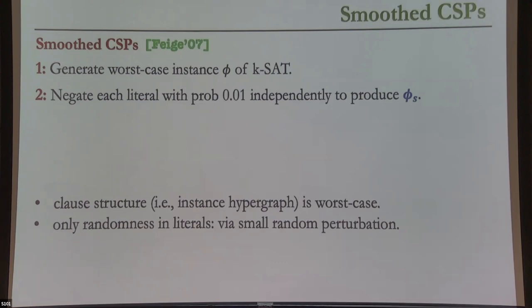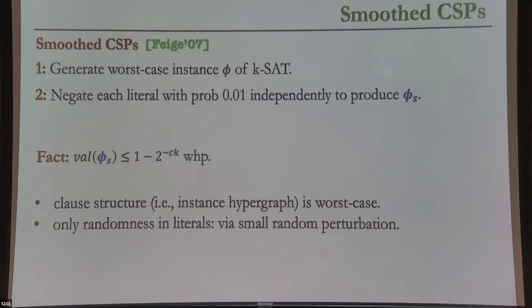The model he considered is inspired by Spielman–Teng smoothed analysis for linear programming. The idea is you start from a worst-case instance — an arbitrary formula — but then you randomly perturb each literal pattern. You take each variable in each clause and flip the negation pattern on it with some fixed constant probability, say 0.01. The key thing to remember is that the clause structure is completely worst-case; it's only the literal patterns where there is randomness.